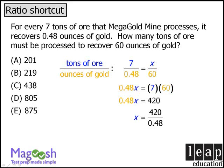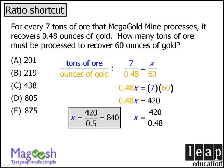We can save considerable time by recognizing that 420 divided by 0.5 is equal to 840. So we know that our answer is somewhere around 840 — it could be answer choice D or E.